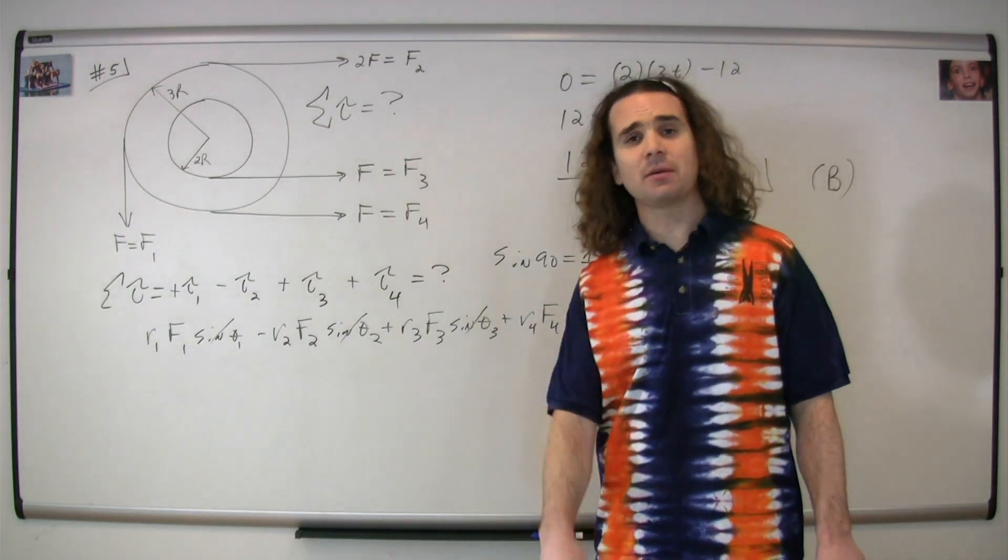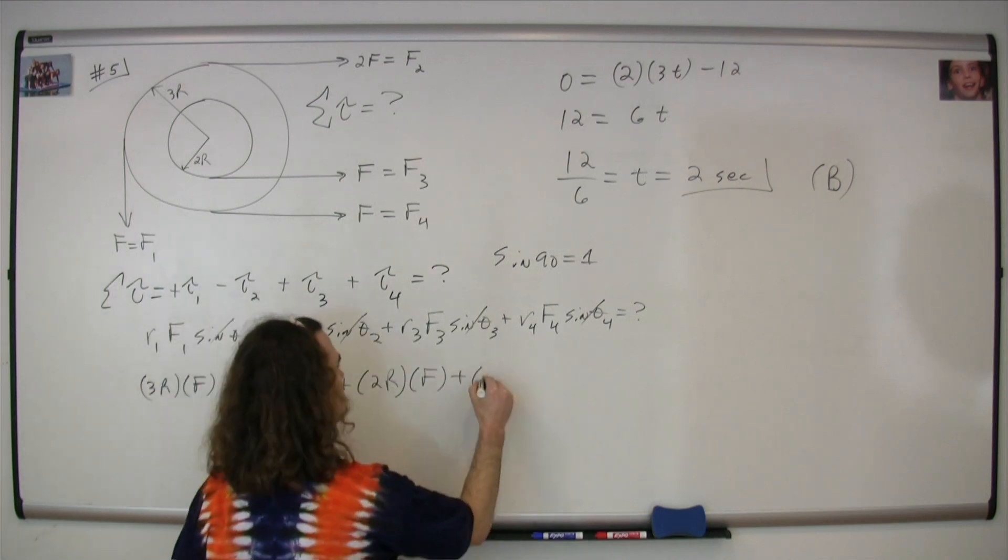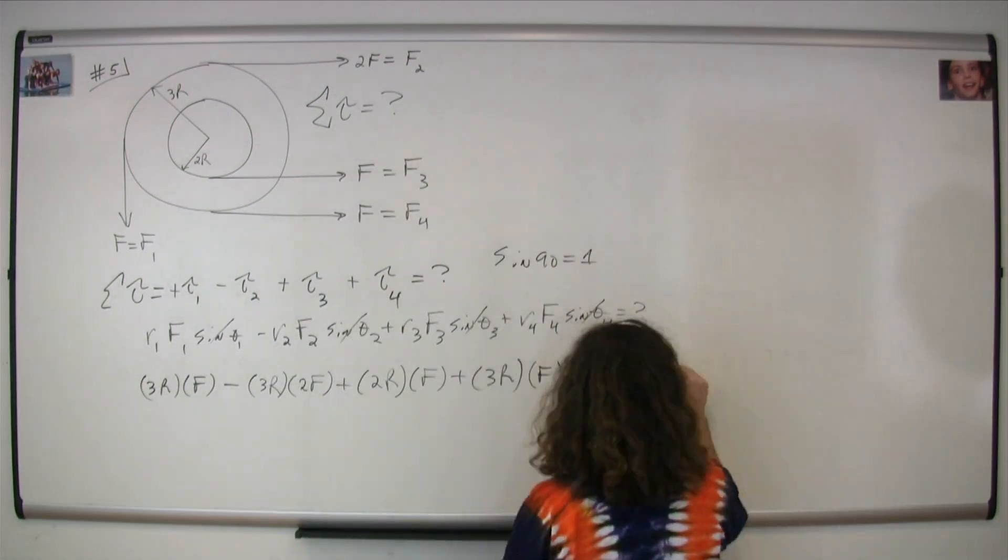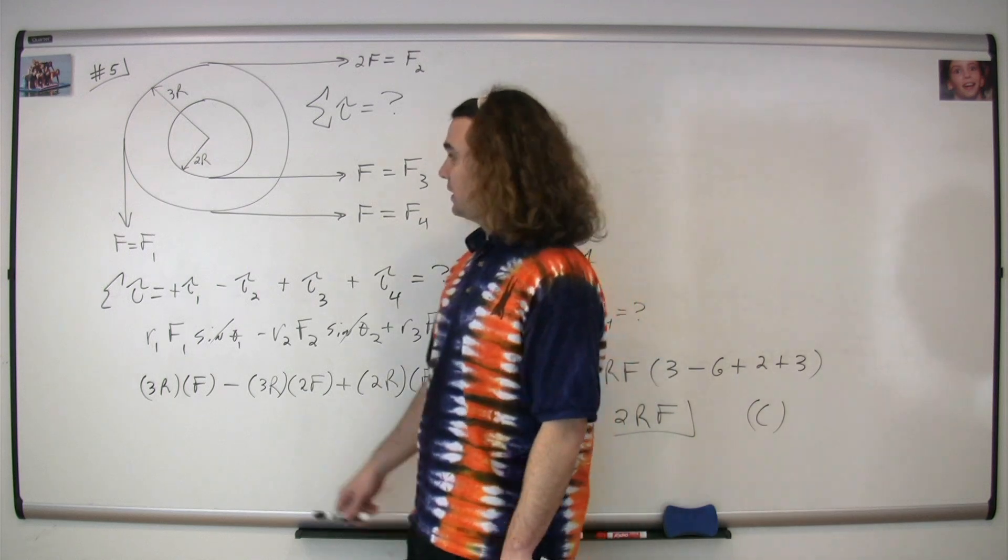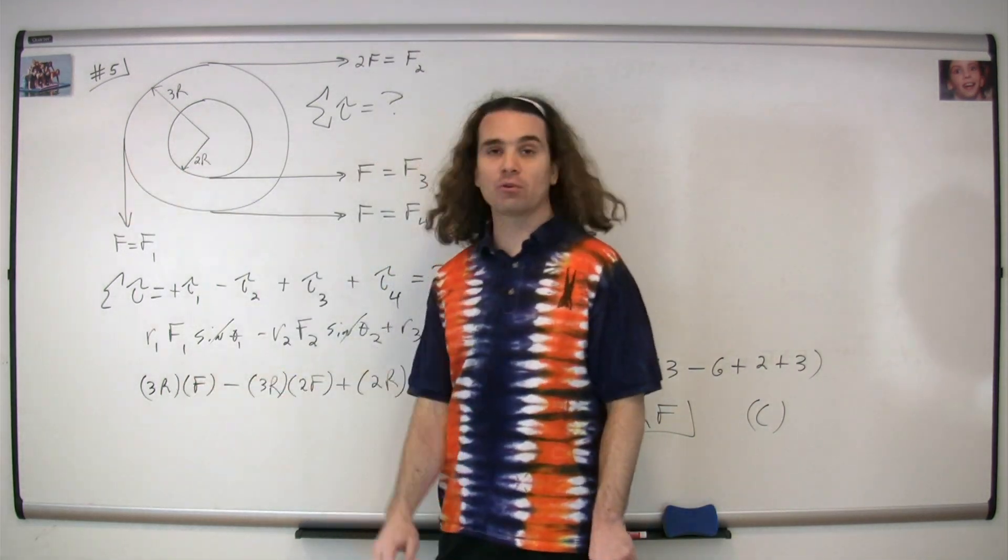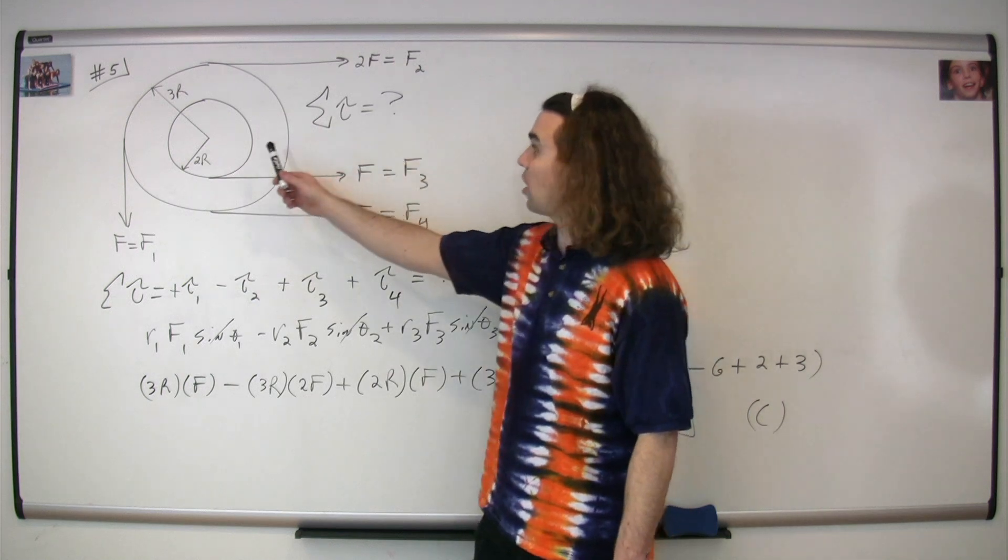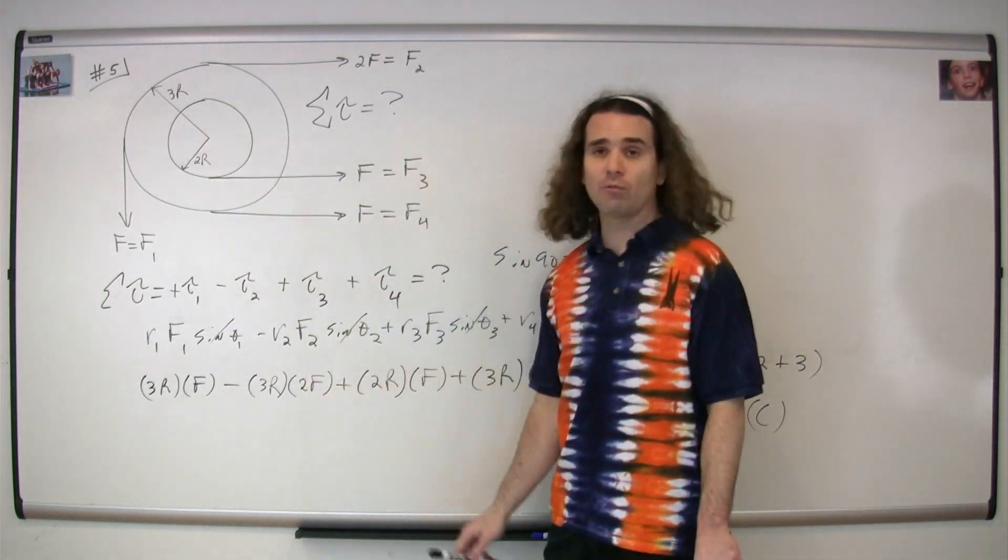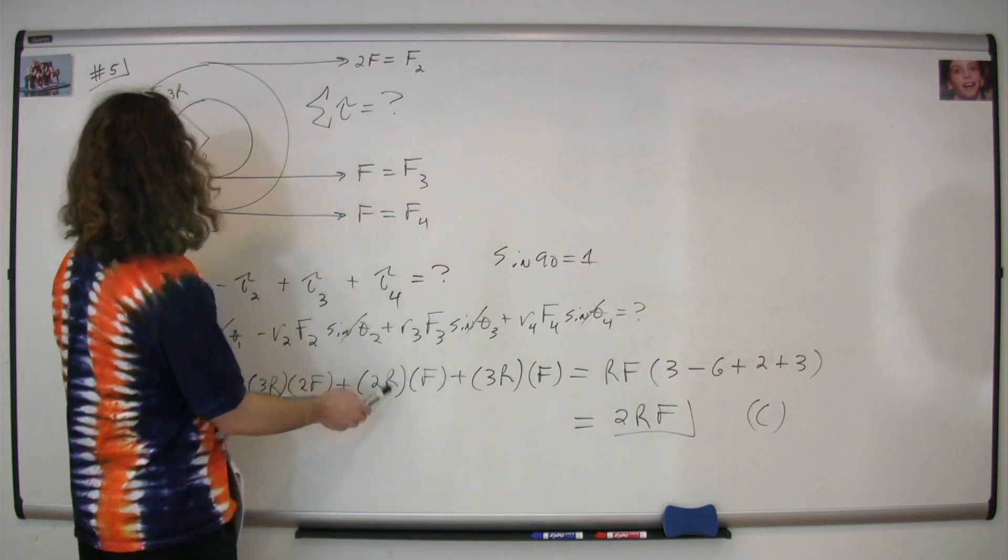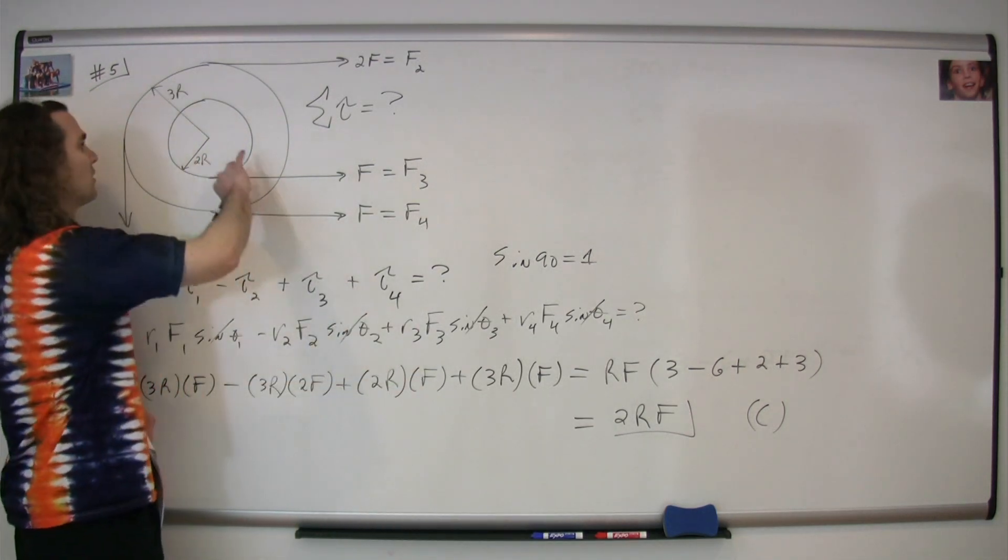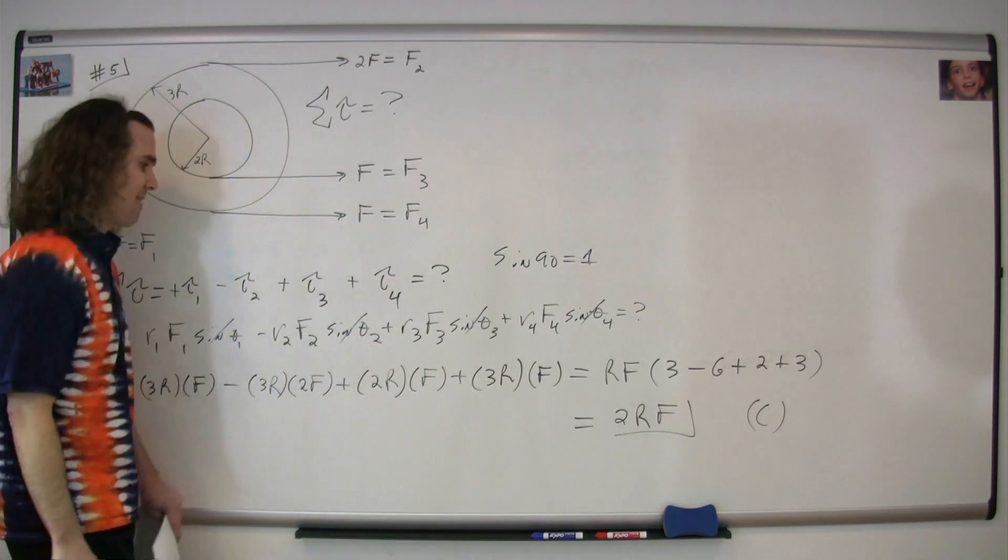And now let's substitute in our values. The lever arm for force one is three times the radius, and the force is F. The lever arm for force two is also three times the radius, but the force is two times F. The lever arm for three is two times the radius, and the force is F. The lever arm for four is three times the radius, and the force is F.